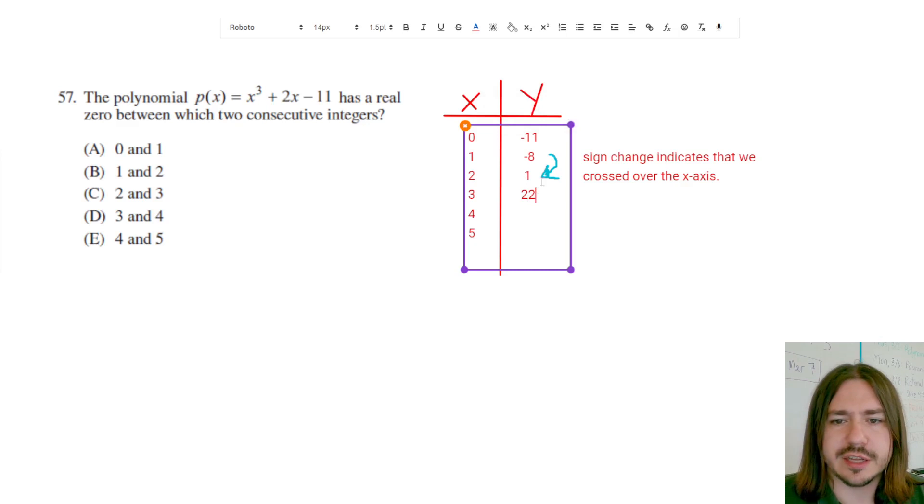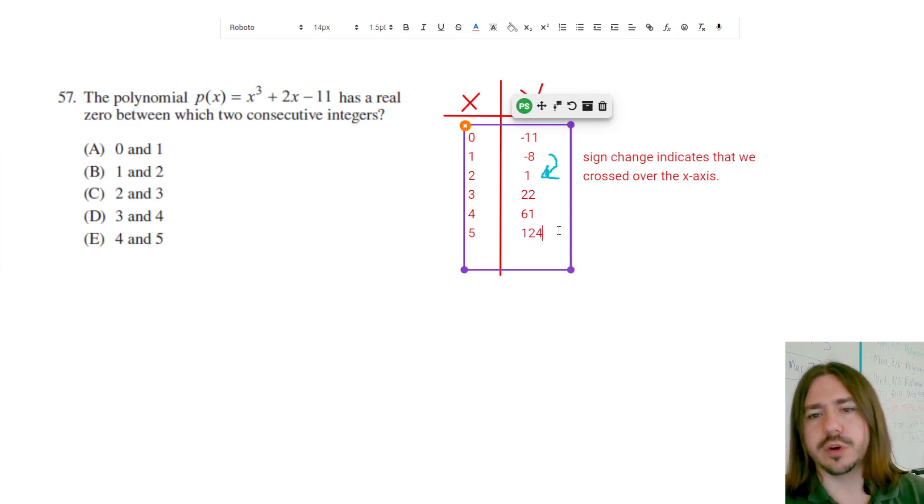So again, we don't see a sign change there. If I type in 4, 4 cubed plus 2 times 4 minus 11, I get 61. And if I type in 5, I'm not really expecting a sign change here, but 5 cubed plus 2 times 5 minus 11, and I'm getting 124.